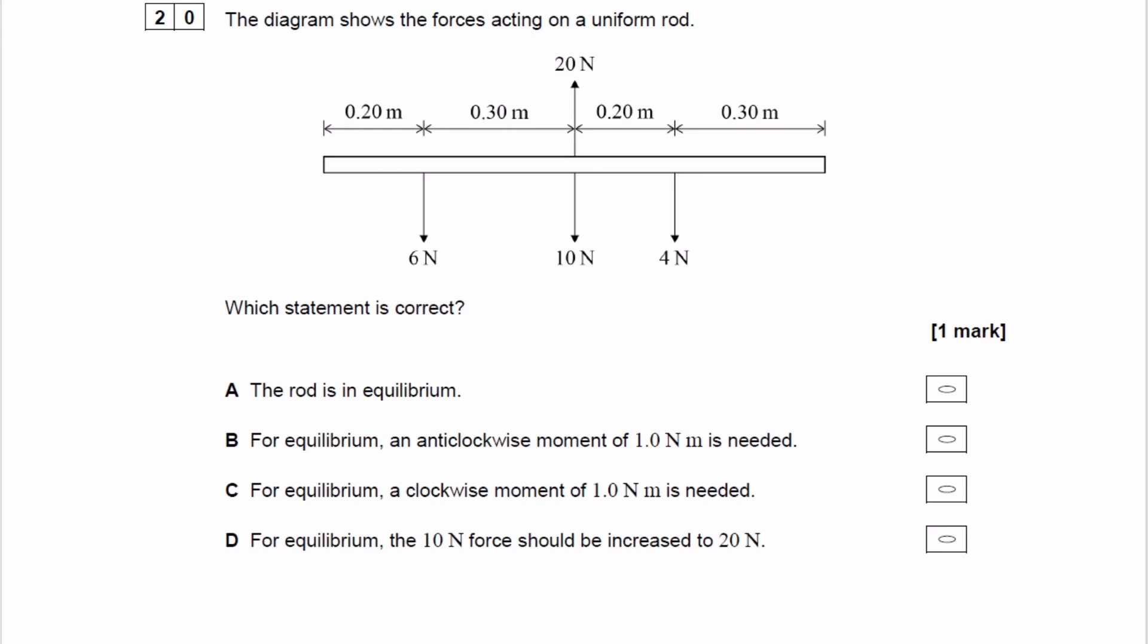if we look at the four forces acting on the object, we have 20 Newtons acting upwards, and if you add them all up, 20 Newtons acting downwards. So that condition is satisfied. Upward forces equal downward forces. So there is no resultant force on our object.